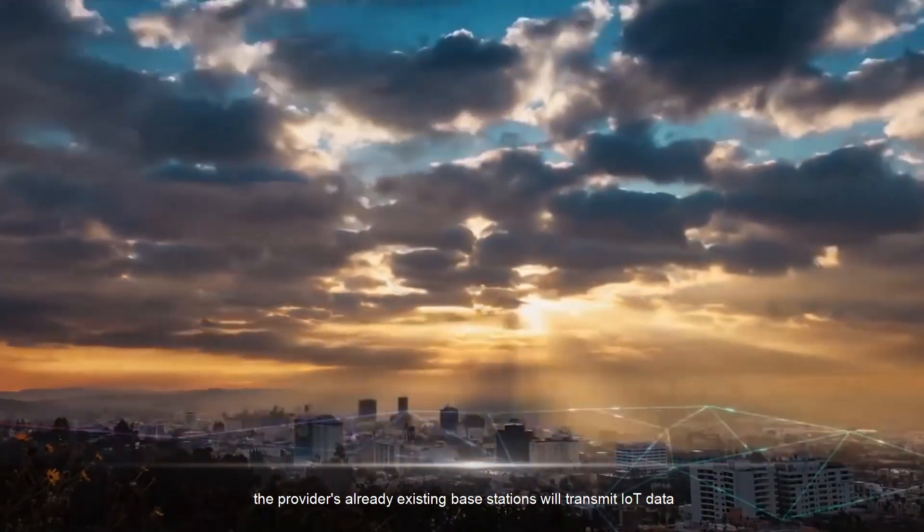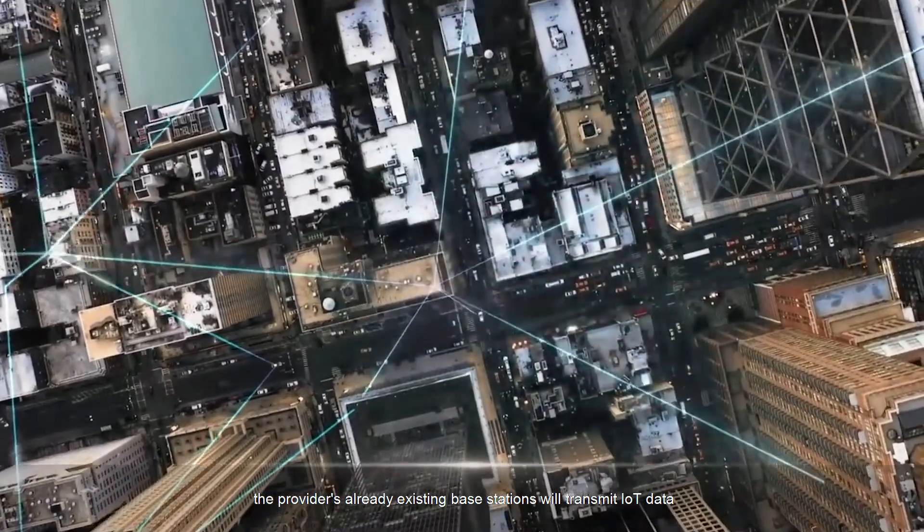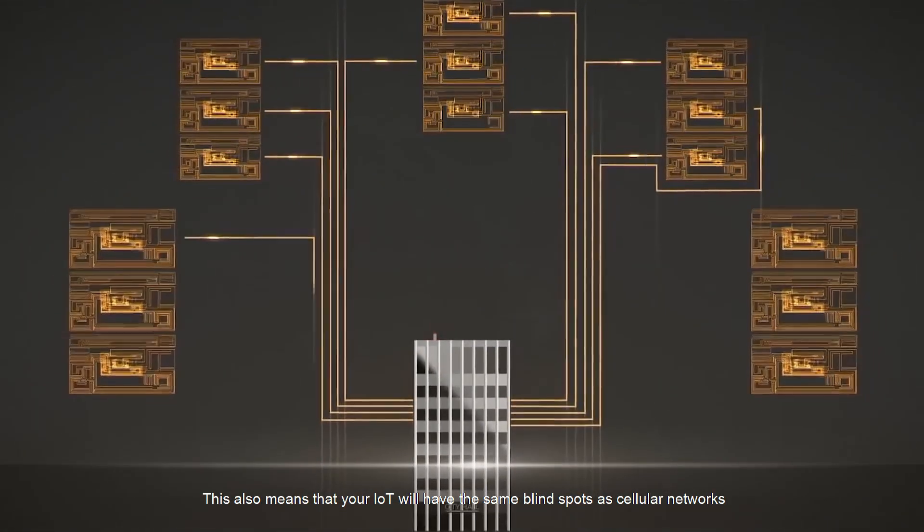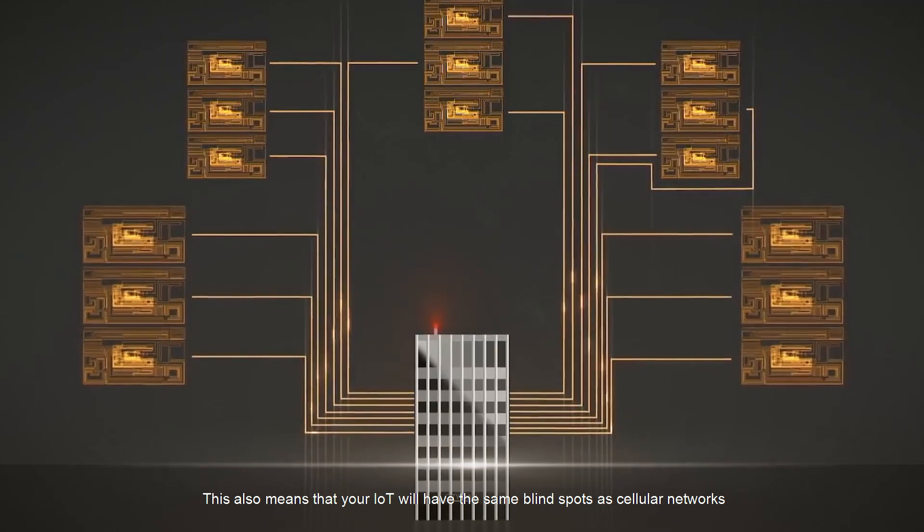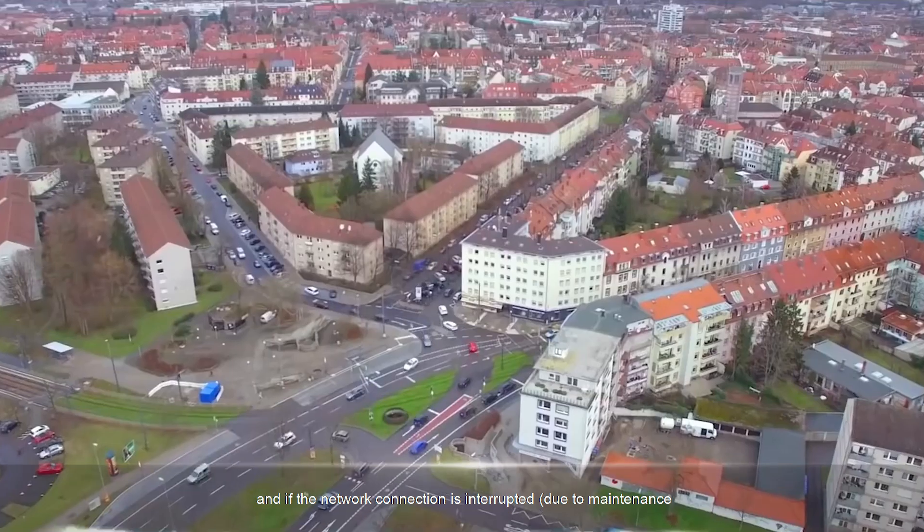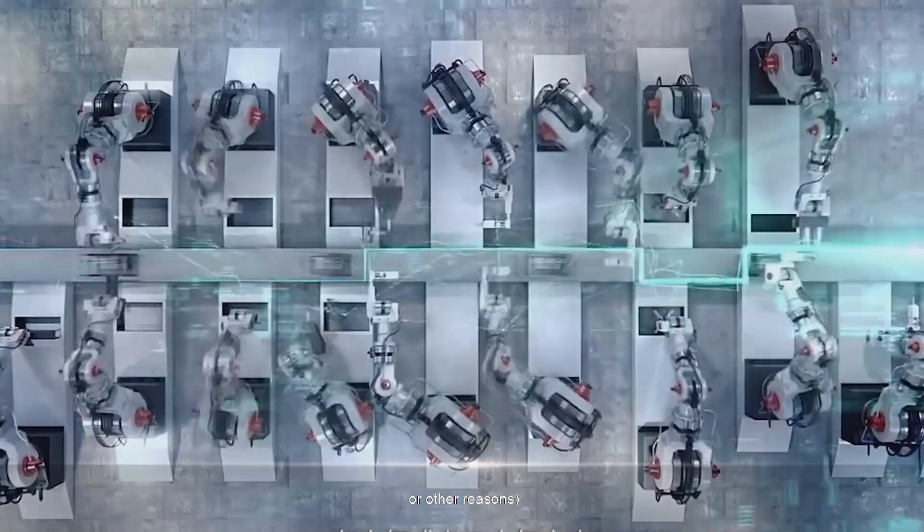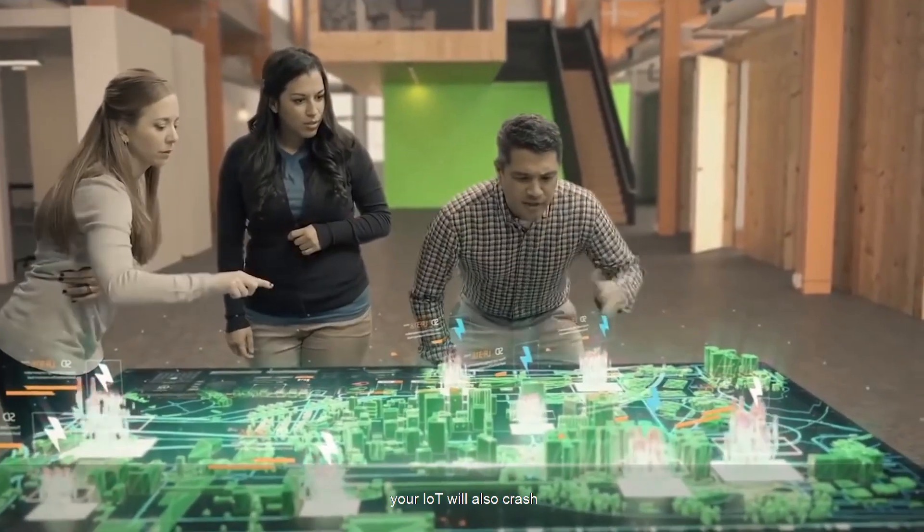Instead, the provider's already existing base stations will transmit IoT data. This also means that your IoT will have the same blind spots as cellular networks, and if the network connection is interrupted due to maintenance, subscription restrictions, emergencies, or other reasons, your IoT will also crash.